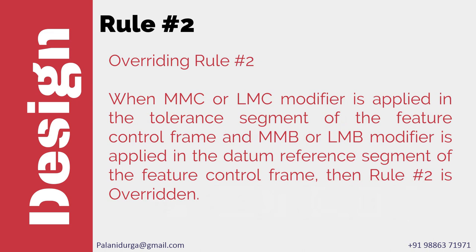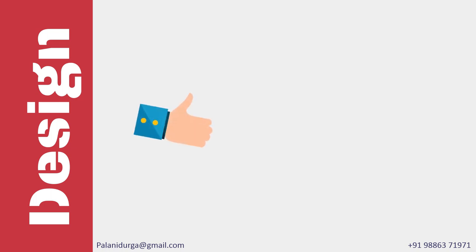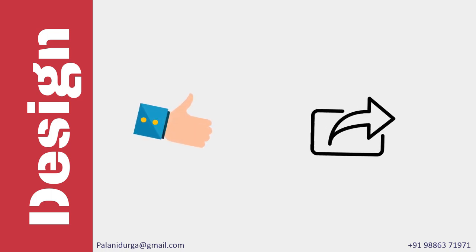When the MMC modifier is applied in the tolerance segment of the feature control frame, and MMB or LMB modifier is applied in the datum reference segment of the feature control frame, we are overriding Rule 2 — meaning we are coming out of the default condition of geometrical tolerances and gaining flexibility. This is all about Rule 2. Hope you got adequate information in this video. Like and share it with your friends. See you soon with another video.